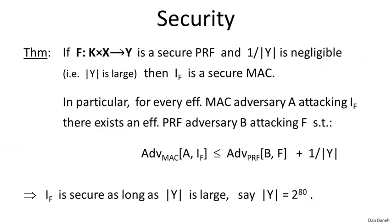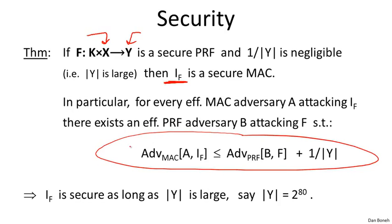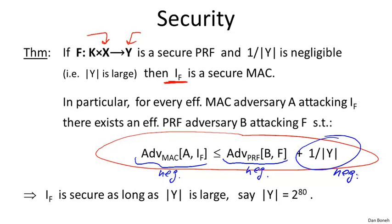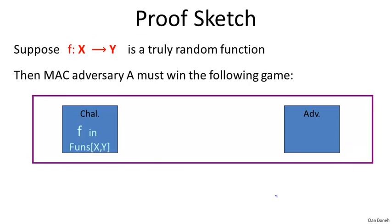Let's state the security theorem. Suppose we have a function F that takes messages in X and outputs tags in Y. Then the MAC derived from this PRF is a secure MAC. Looking at the security theorem, you can see the error bounds very clearly. Since the PRF is secure, we know that the PRF advantage term is negligible. For the MAC to be secure, we want the output space Y to be large. For example, taking a PRF that outputs 80 bits is perfectly fine — that generates an 80-bit MAC, and the advantage of any adversary will be at most 1 over 2-to-the-80.